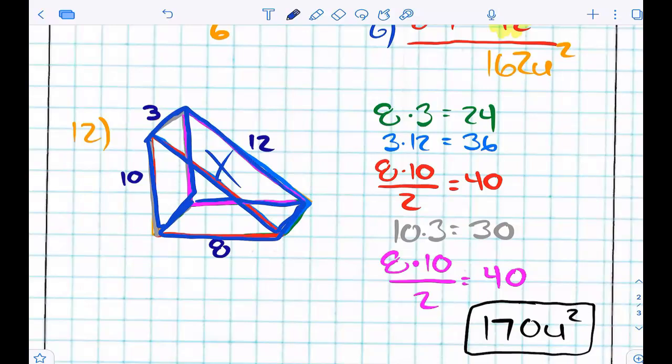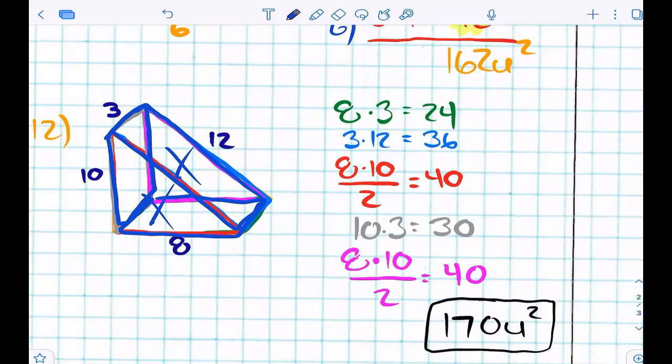And then I have the front triangle and the back triangle. That's four and five. Remember, triangles you have to divide by two. We good? There you go.